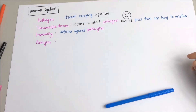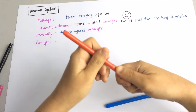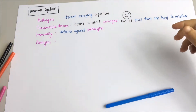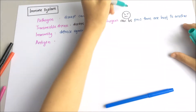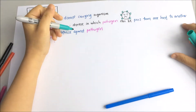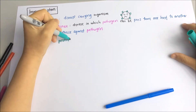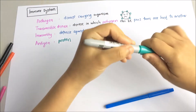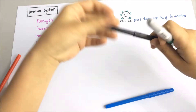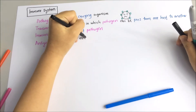So what is an antigen? Antigens are proteins found on the external surface of a pathogen, and these proteins will induce antibody production.